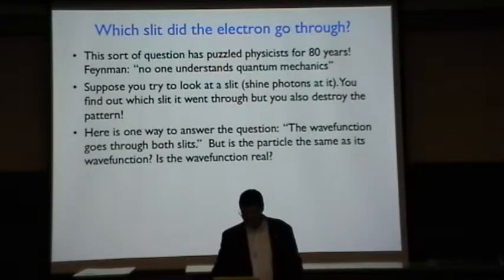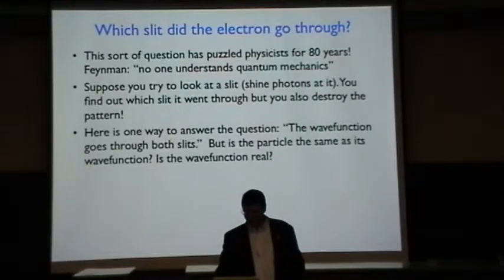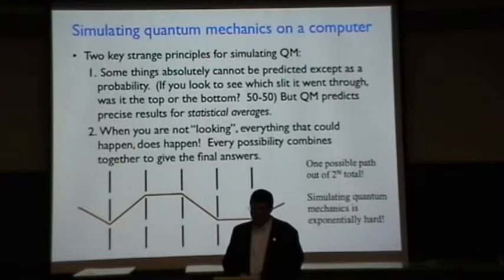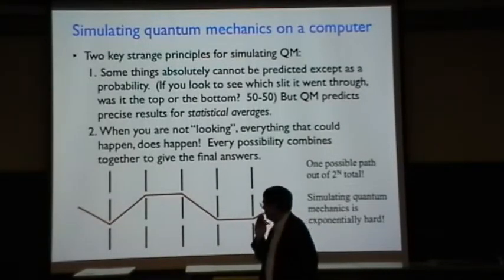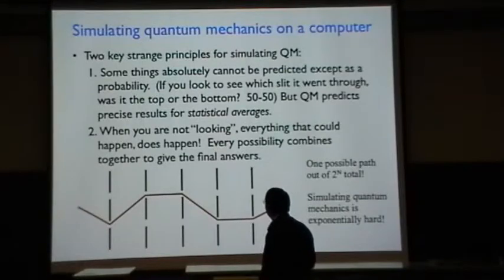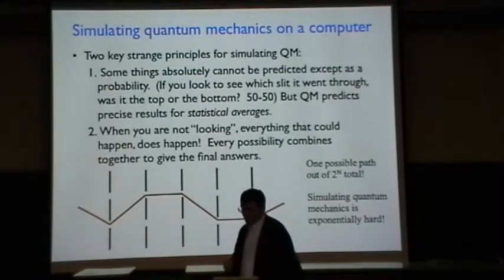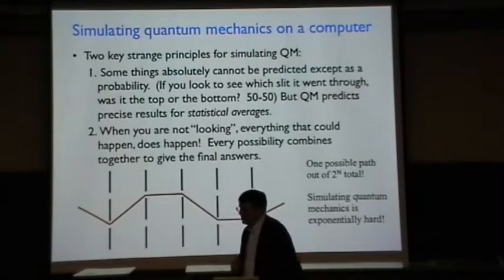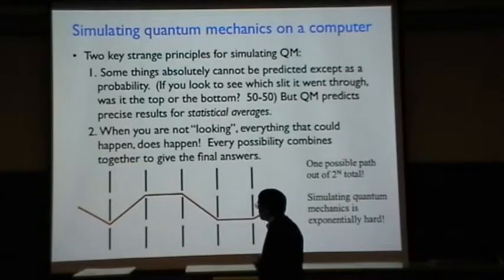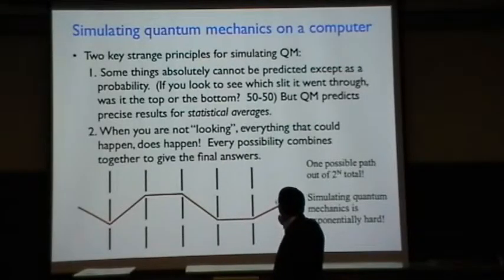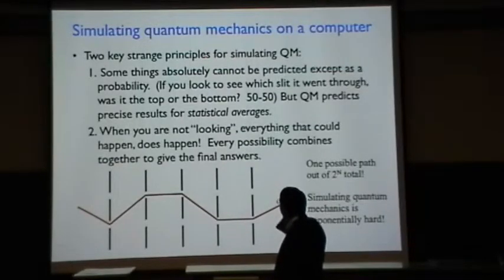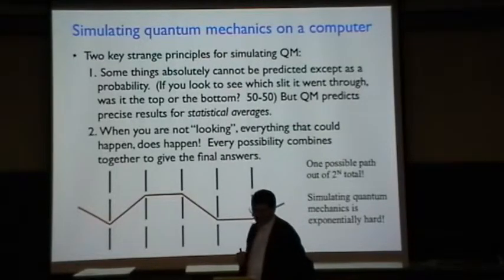So that gives you a little bit of a flavor of what's so weird about quantum mechanics. Let's now talk about putting that on the computer and trying to predict what happens. And we know how to do this very well. In that sense we do understand quantum mechanics because we know how to put it on the computer. There's a couple of key strange principles for simulating quantum mechanics and for predicting quantum mechanics. First is that some things actually cannot be predicted except as a probability. So if you do look at which slit it came through, it comes from one or the other, but it'll be 50-50, it'll be a probability and there's no way of predicting which it was. There's no way to somehow follow and predict ahead of time.